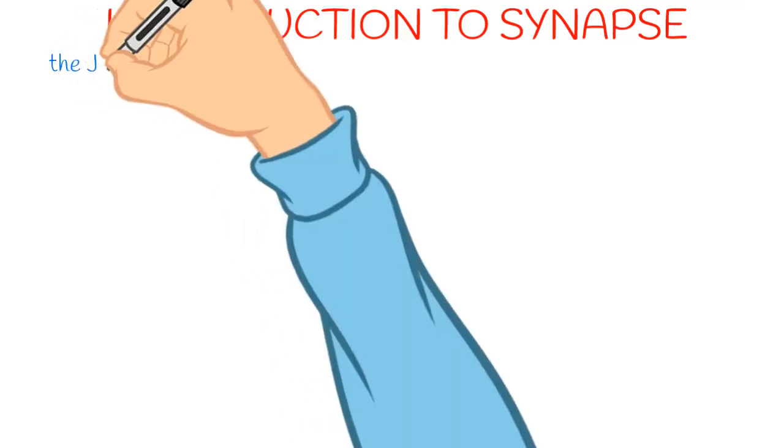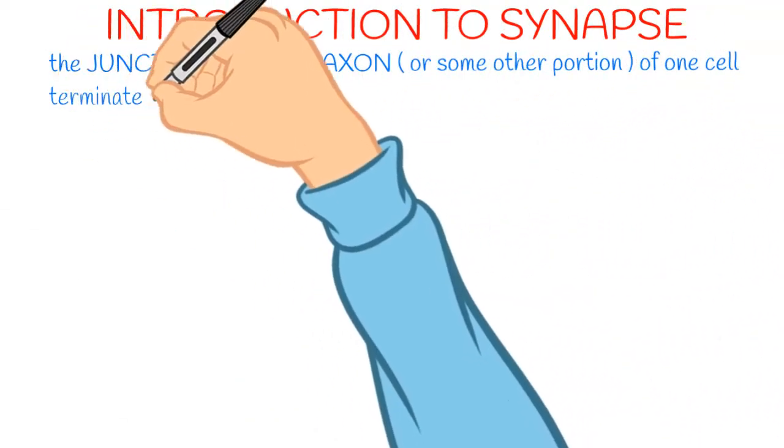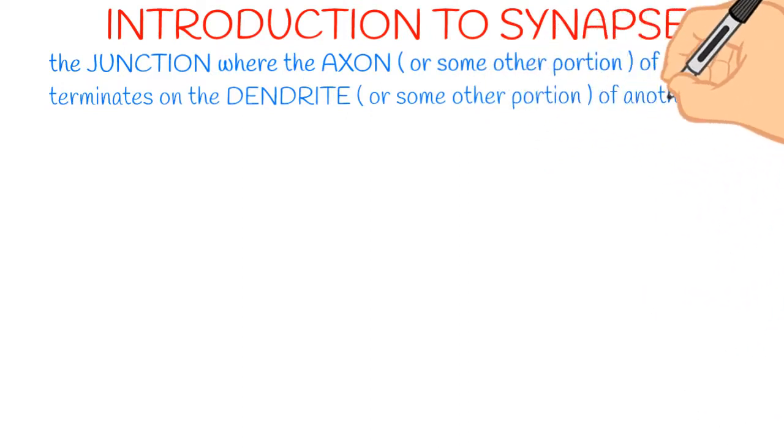Let's start with the introduction to synapse. It is a junction where the axon or some other portion of one cell terminates on the dendrite or some other portion of another cell. Most commonly, we can say that it's mainly a junction between axon and dendrites.